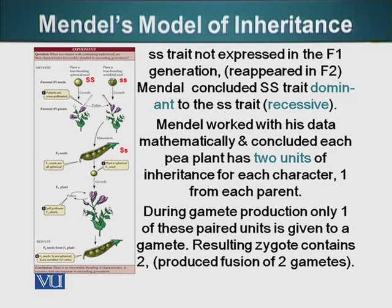The resulting zygote contained two particles for the same trait, since the zygote was the product of fusion of two gametes. If we interpret this data using notation, the spherical seed trait is capital S, so the parent spherical seed plant had two particles — we didn't know these were genes at the time — two particles of capital S. The wrinkled state is small s, so the wrinkled seed plant had two small s's.